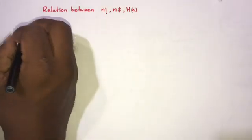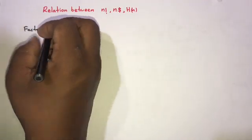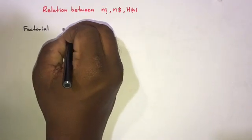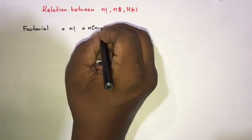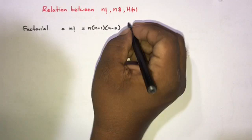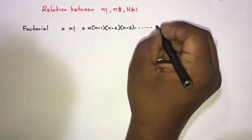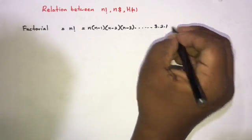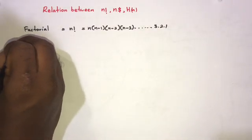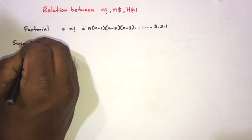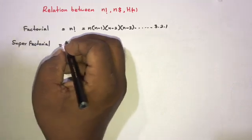First, I think you know about factorial. If we take factorial, we know this is equal to n factorial — the formula: n times (n minus 1) times (n minus 2) times (n minus 3), and so on, going to 3, 2, 1.